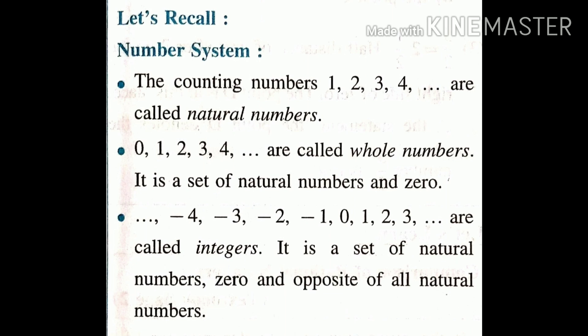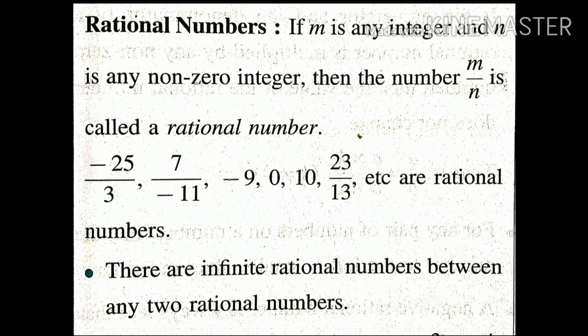Opposite means the opposite of 1 is minus 1, opposite of 2 is minus 2. And a new type for you is rational numbers.